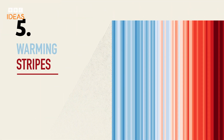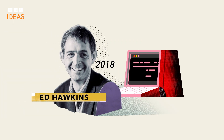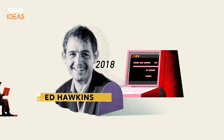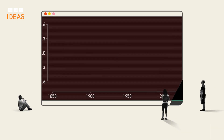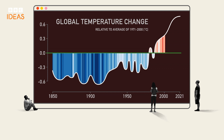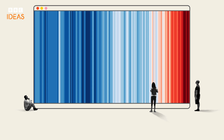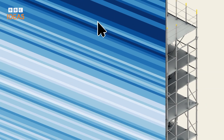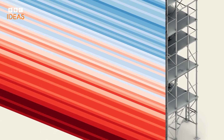Sometimes iconic status can be achieved almost accidentally. In 2018, scientist Ed Hawkins was invited to give a speech about climate change at Hay, a literary festival in Wales. He needed to convey the increase in global average temperatures to a largely non-scientific audience, so he devised a chart that used no words, just colours. It was a stunningly simple way of demonstrating how the planet had warmed since 1850. The chart, known as the warming stripes, uses blues to indicate cooler than average years and reds to show years with temperatures hotter than average.